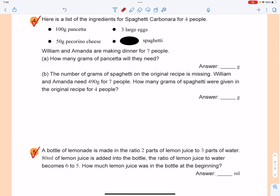Hope more question number four in lesson 14. Here's a list of ingredients of spaghetti carbonara for four people. You need to have 100 grams pancetta, three large eggs, 50 grams pecorino cheese, and some spaghetti.